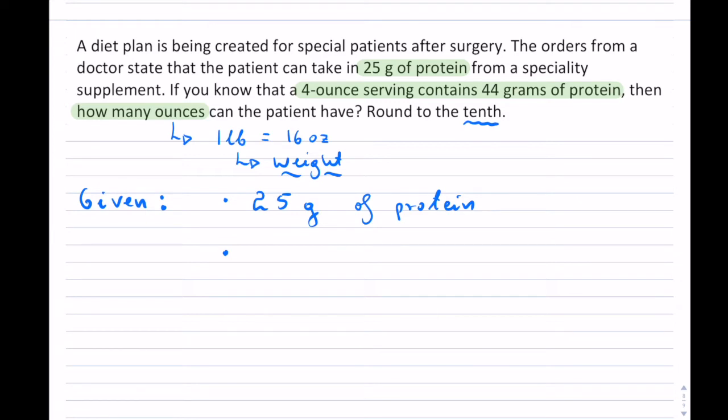Now, we know that 4-ounce serving contains 44 grams of protein. So 4 ounces is OZ, and that is giving us 44 grams of protein.